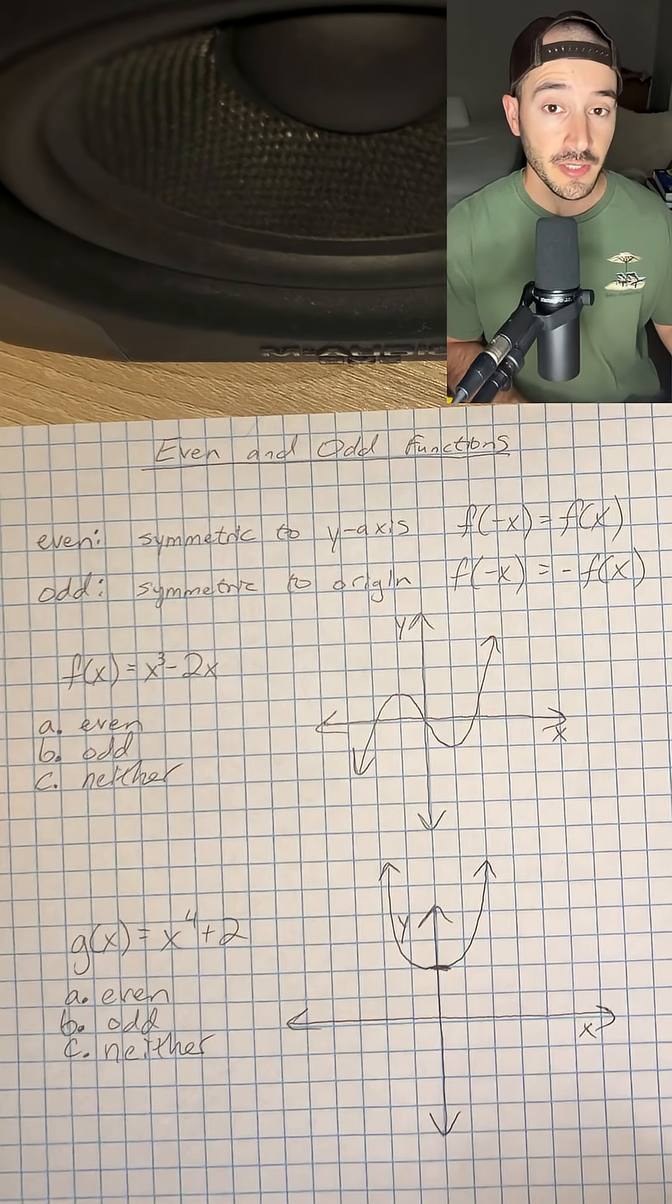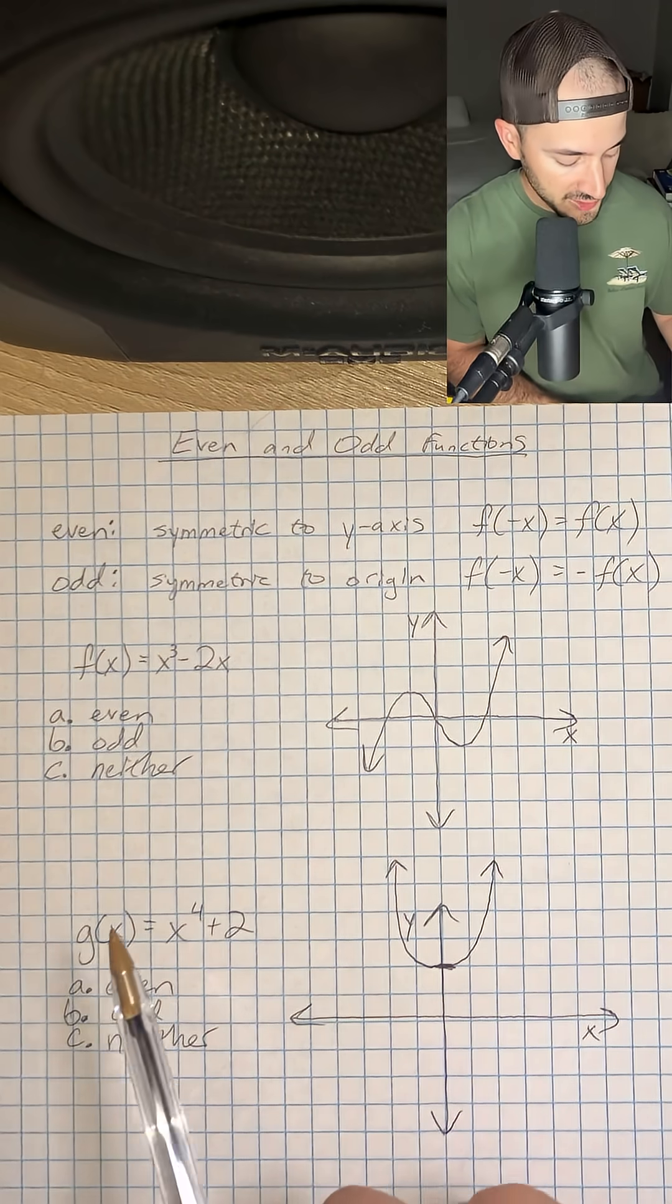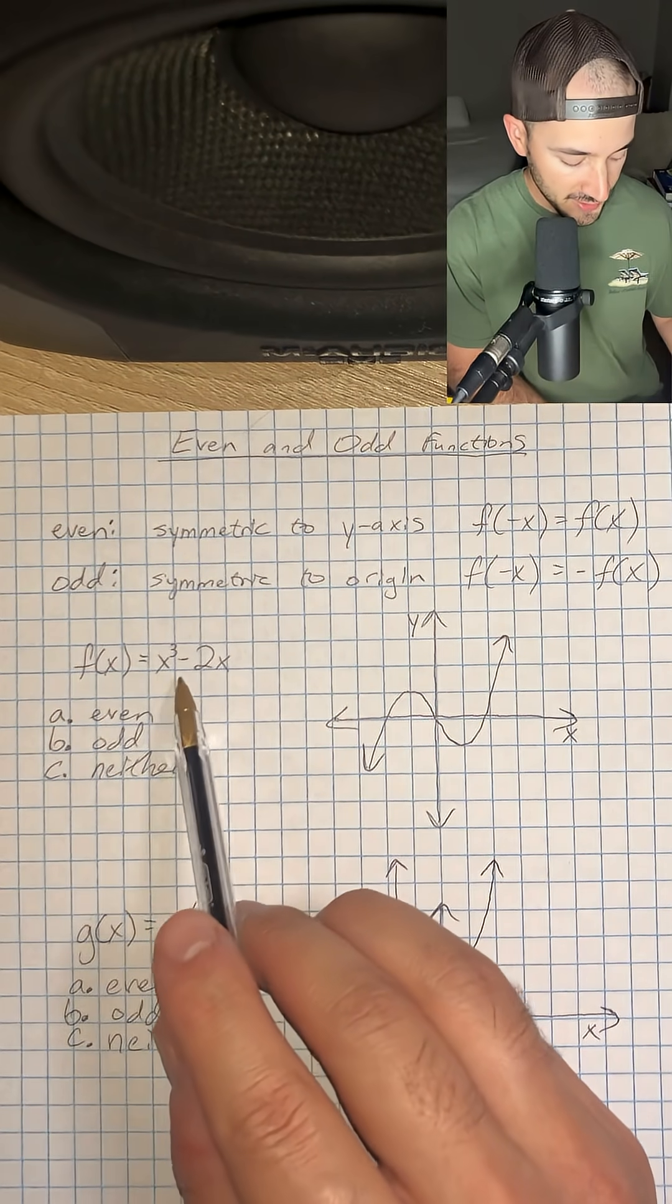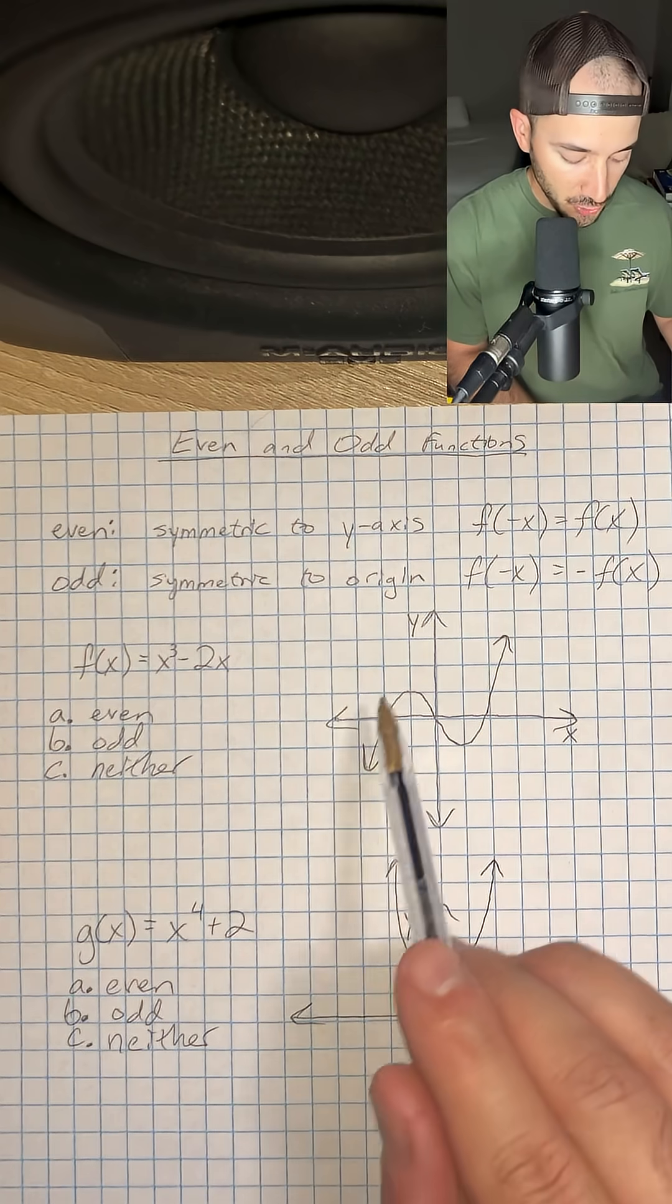I'll show you what that looks like algebraically in just a second. Let's do a couple of examples. We have f of x is equal to x cubed minus 2x, and here's what the graph looks like.